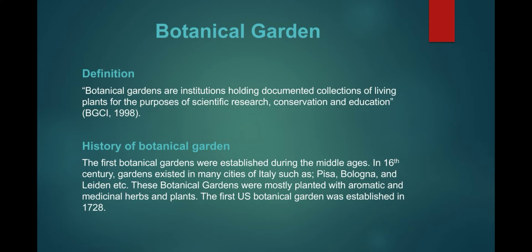History of botanical garden. The first botanical gardens were established during the Middle Ages. In the 16th century, gardens existed in many cities of Italy such as Pisa, Bologna, Leiden, etc. These botanical gardens were mostly planted with aromatic and medicinal herbs and plants.